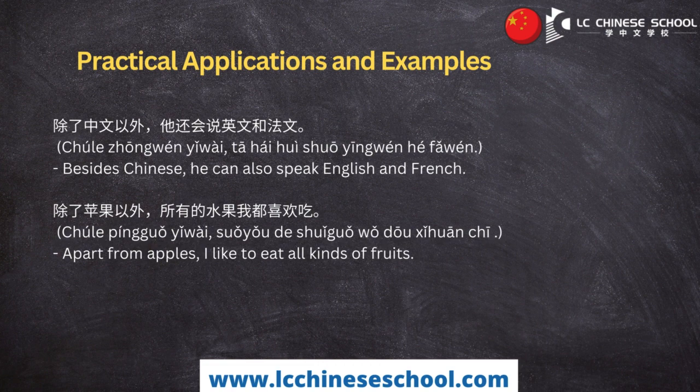Another example: 除了苹果以外，所有的水果我都喜欢吃 (chúle píngguǒ yǐwài, suǒyǒu de shuǐguǒ wǒ dōu xǐhuān chī). It means 'Apart from apples, I like to eat all kinds of fruits.' Here, apples are excluded from the fruits the speaker likes.